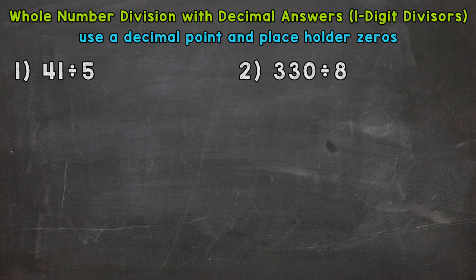So let's jump into number one, where we have 41 divided by 5. The first thing we want to do is set the problem up. So we have 41 divided by 5, and we're going to use the same exact division process as any other problem. So we start with divide. Four divided by 5, how many whole groups of 5 can we pull out of 4? Well, we can't.